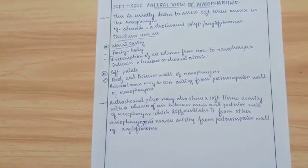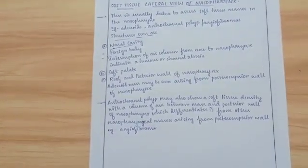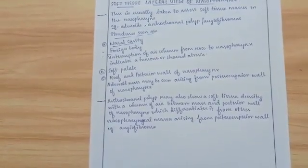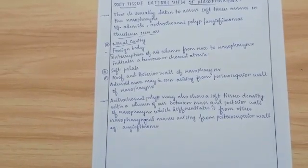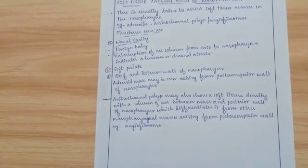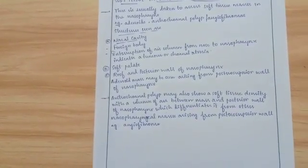Adenoid mass may be seen arising from the posterior superior wall of nasopharynx. Antrochoanal polyp may also show a soft tissue density with a column of air between the mass and posterior wall of nasopharynx, which differentiates it from other nasopharyngeal masses arising from the posterior superior wall such as angiofibromas.